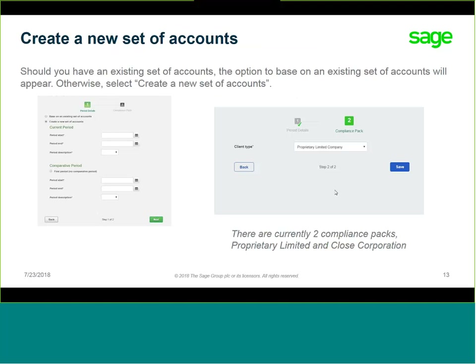Thereafter, you'll be directed to the Final Accounts portal where you'll see the compliance pack details — the specifics required around the date of your reporting period and your client type. We currently have two offerings: PTY Limited and CC packs, created under the IFRS for SME compliance reporting structure. It is very important to note that XBRL is currently being offered on our PTY Limited packs, and the XBRL generation for CC packs will be released in due course.